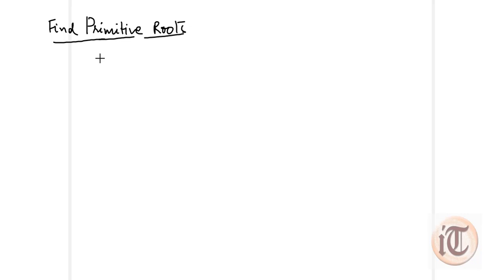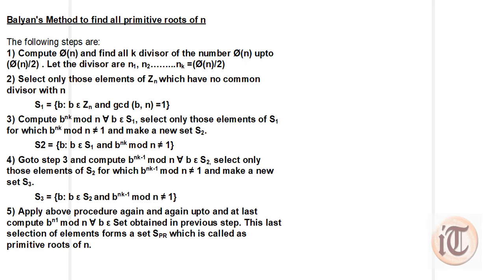Hello friends. In this video we are going to discuss how we can calculate all the primitive roots for a particular number n. We will discuss one method which is used to find the primitive root of a number n, and that method is called the Ballian method, in which there are total five steps. We will discuss all five steps and then take one or more examples to calculate the primitive root using this method.